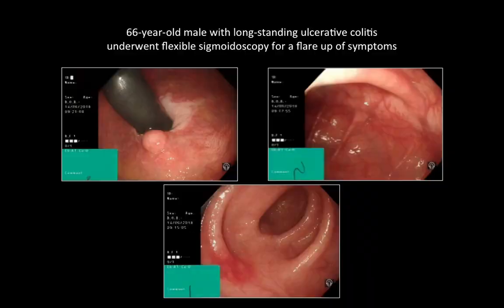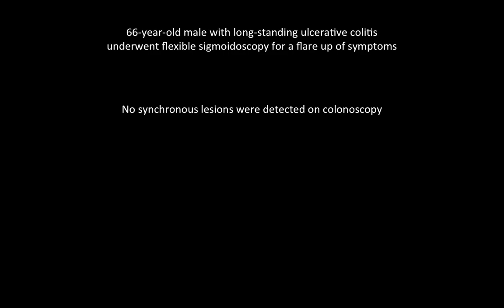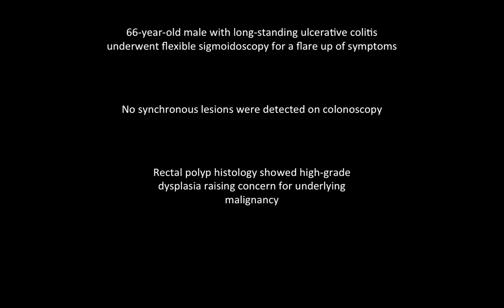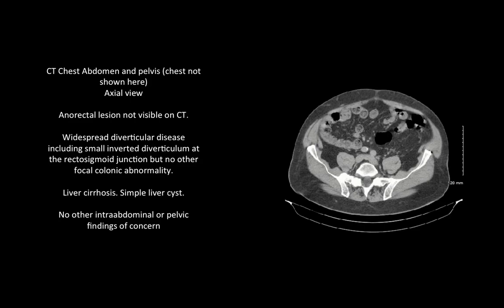A 66-year-old male with a background history of long-standing ulcerative colitis underwent flexible sigmoidoscopy for a flare-up of symptoms. This found largely normal mucosa but a fibroepithelial polyp at the anorectal junction. No synchronous lesions were detected on colonoscopy. Histology from the biopsy showed high-grade dysplasia with some features raising the possibility of deeper invasion.